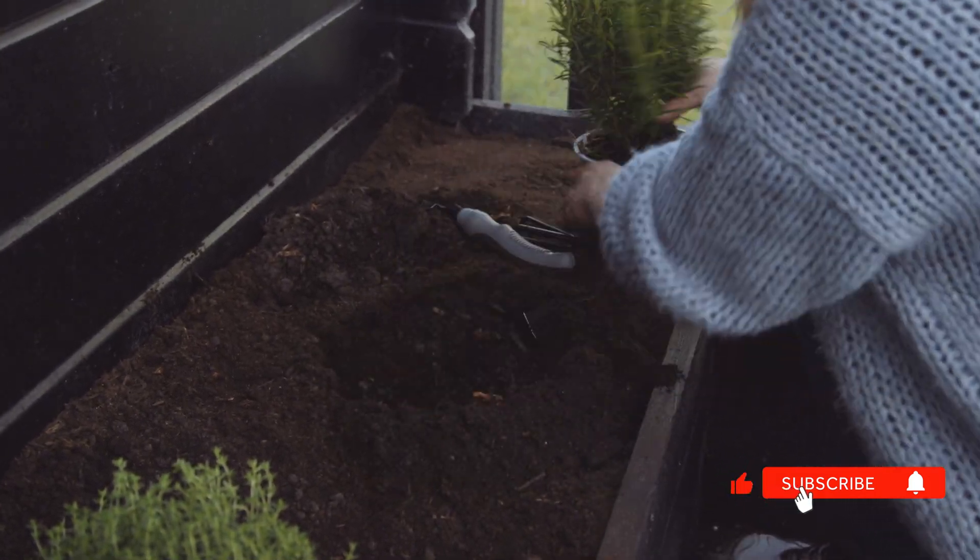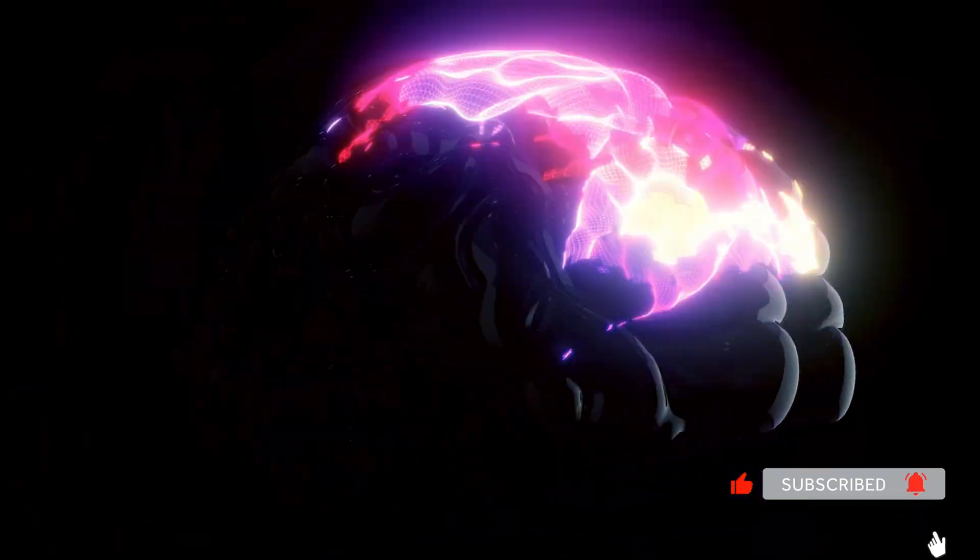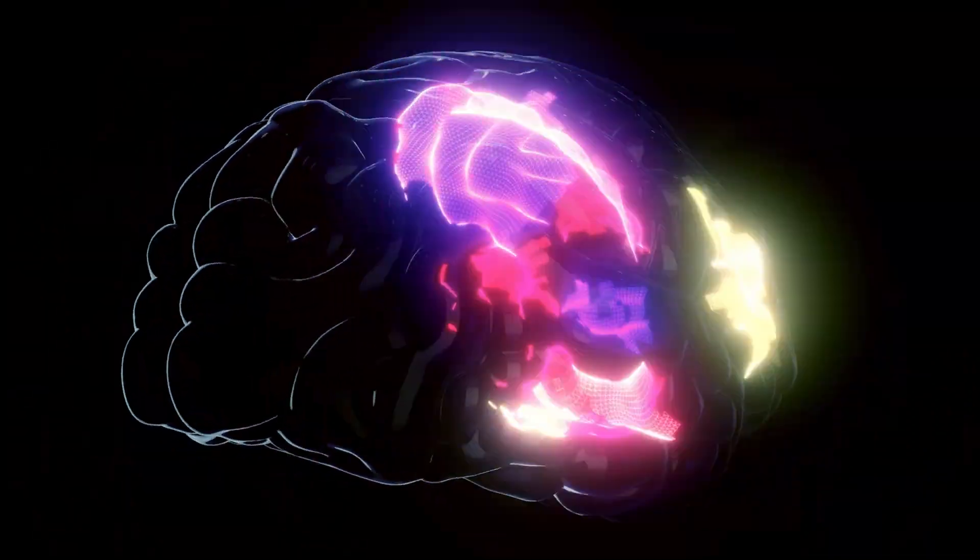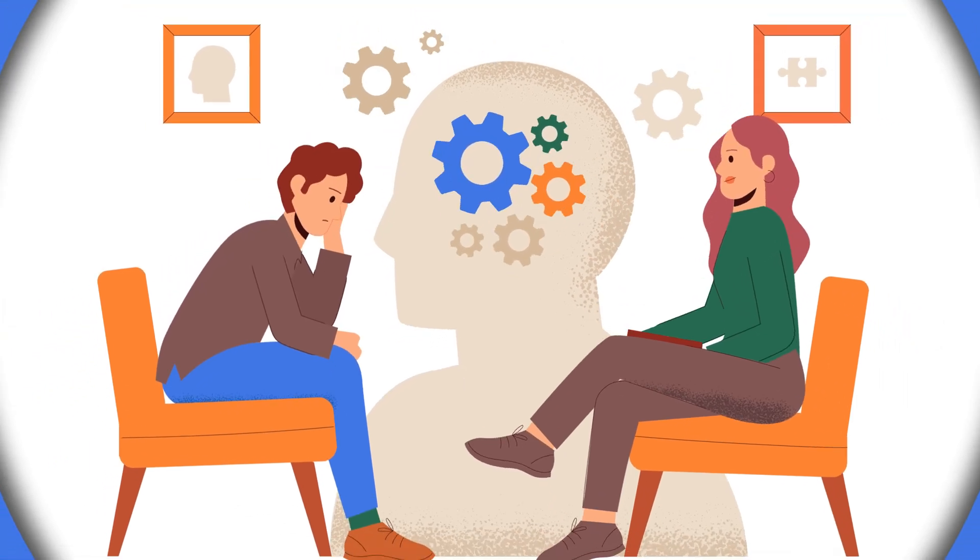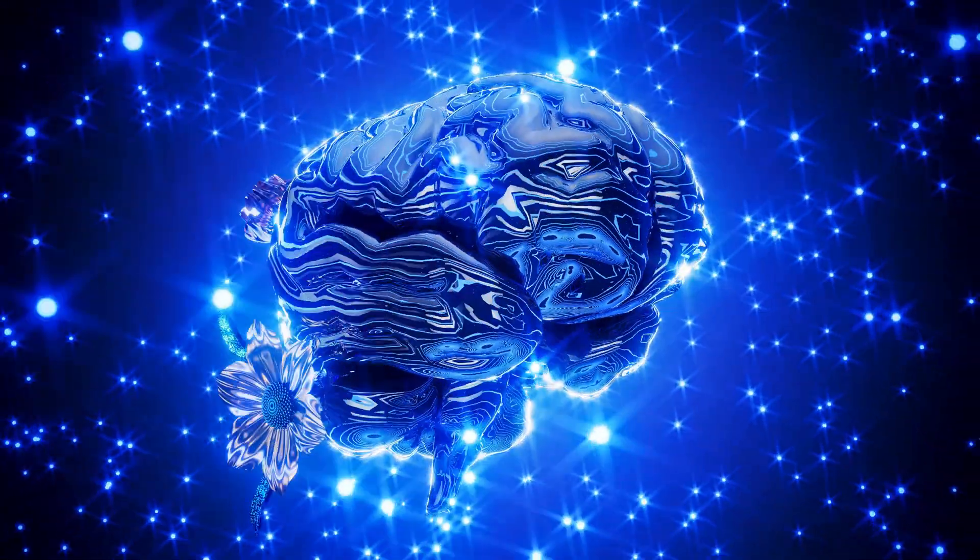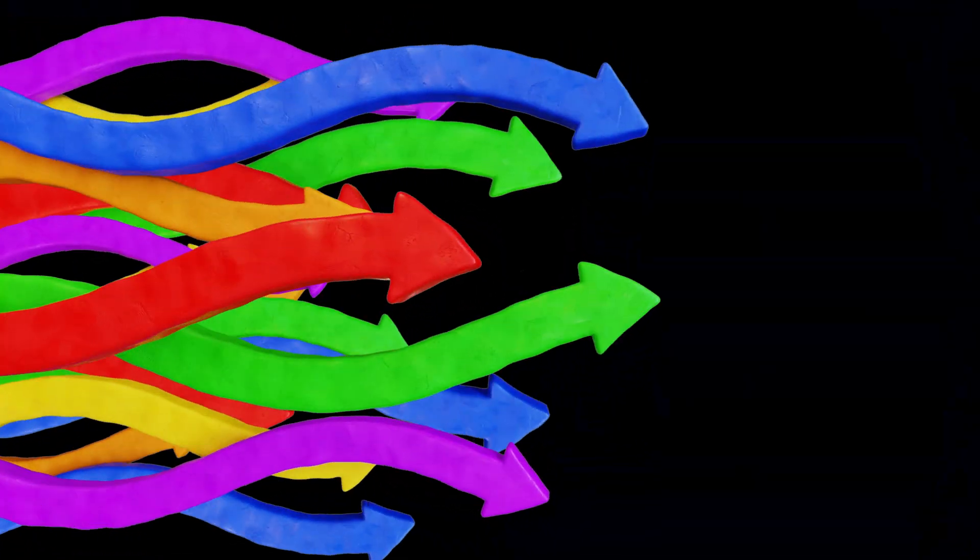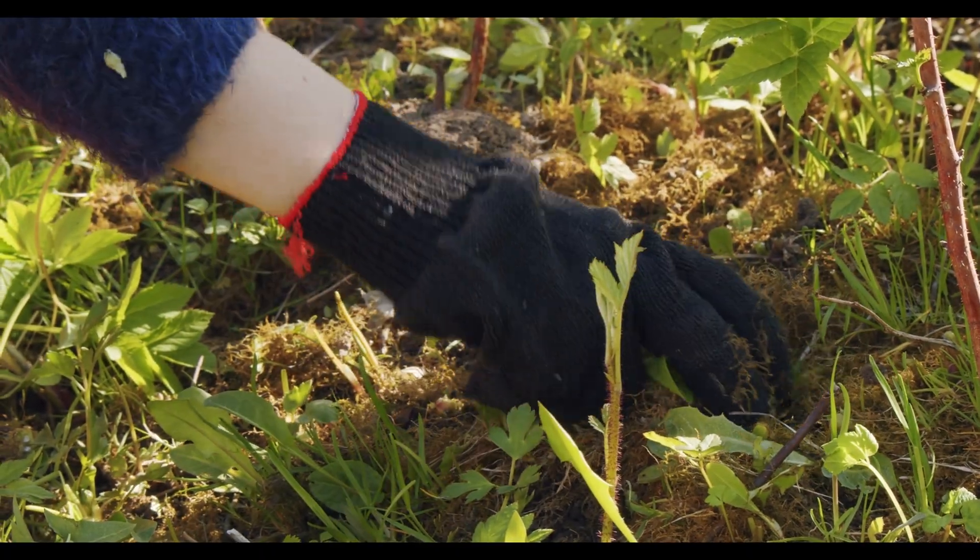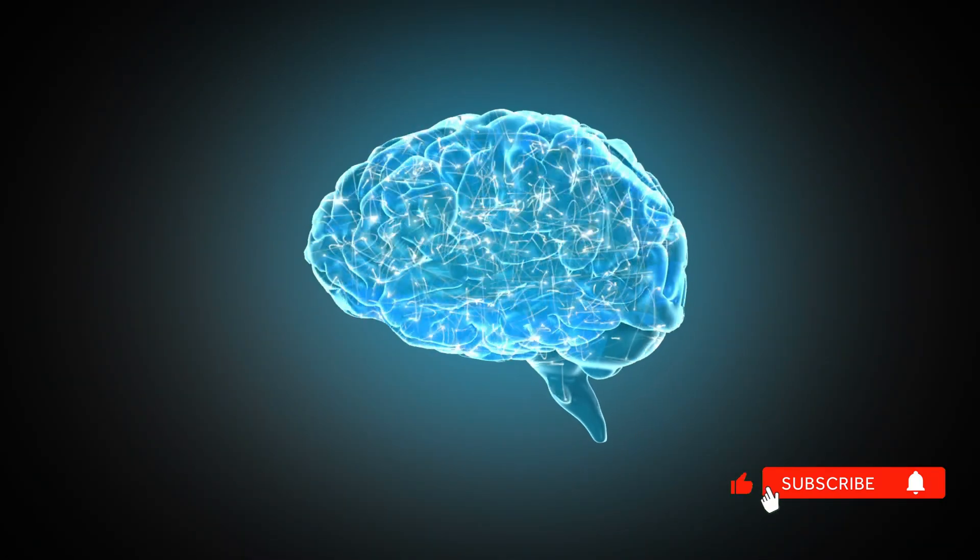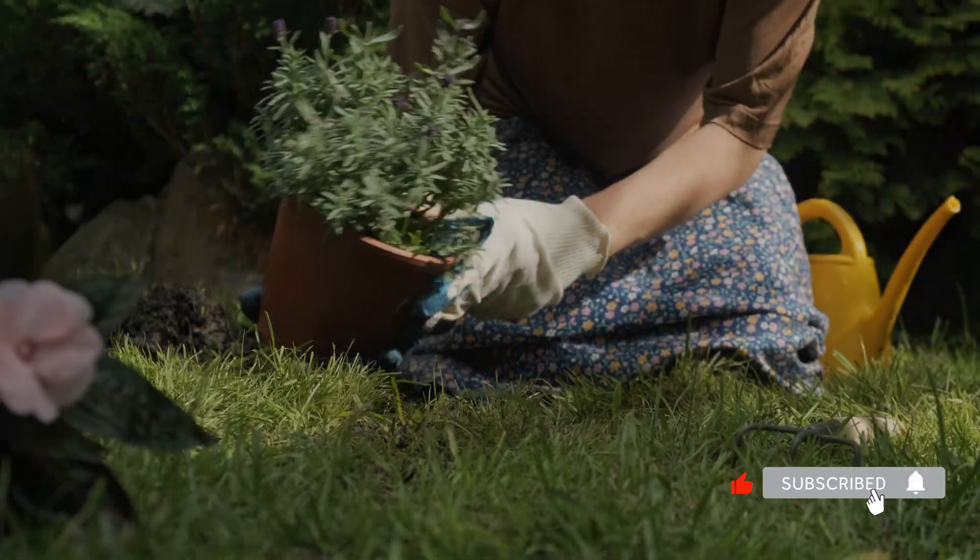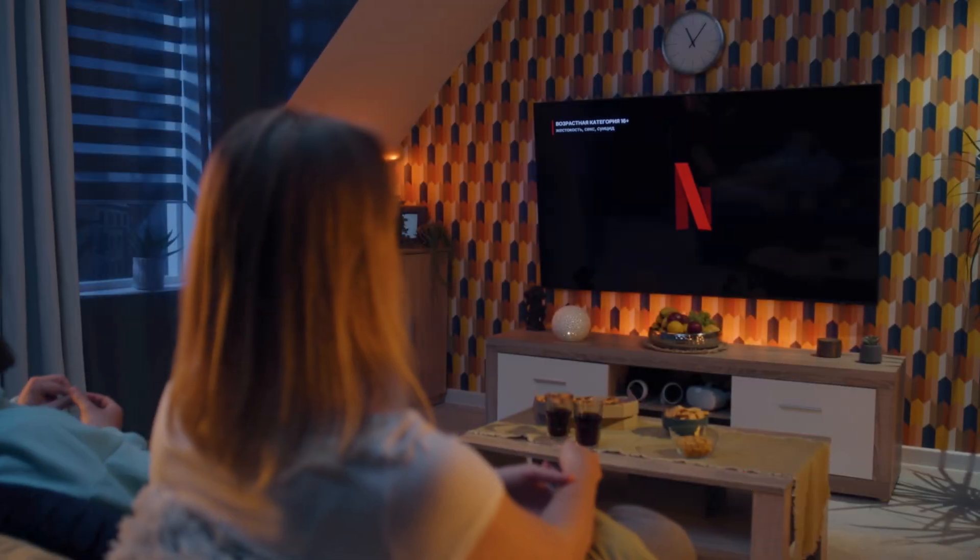The solution? Gardening. Gardening rebuilds your exhausted brain through four neurological mechanisms. First, soft fascination. Psychologists call this attention restoration theory. Your brain needs soft fascination. Activities that capture attention without demanding cognitive effort. When you're pulling weeds, your brain is engaged. But your prefrontal cortex gets to rest. 20 minutes of gardening can feel more restorative than two hours of Netflix.